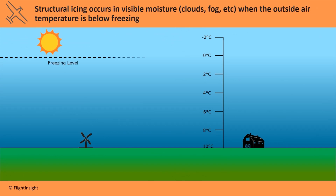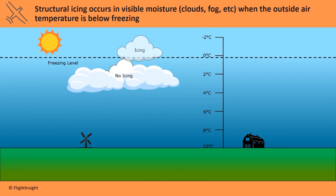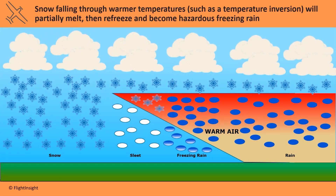Icing can occur when flying through visible moisture, such as clouds or fog, when the outside air is below freezing. Flying through clouds can produce ice even when the surface temperatures are warm, because temperatures aloft can cool down to below freezing. There's typically a freezing level where temperatures are expected to be below freezing. Icing can be picked up outside of clouds and certain types of precipitation. Typically if precipitation falls from clouds below freezing, it falls as snow. As long as the snow falls through air that remains below freezing, it'll reach the ground as snow.